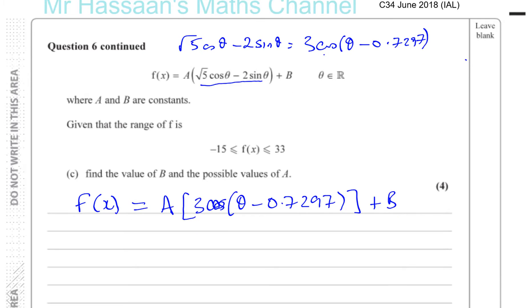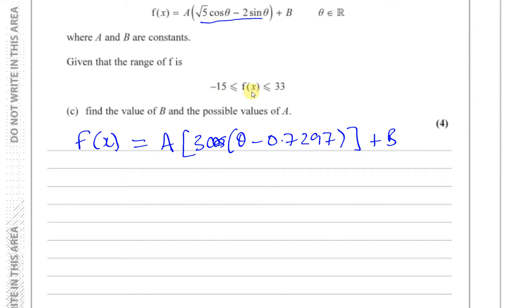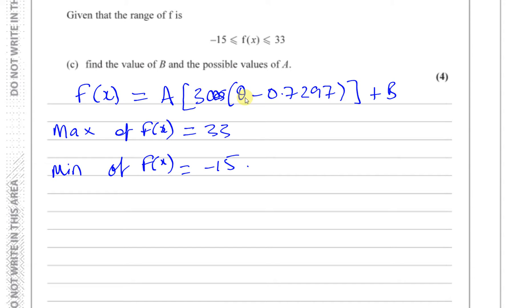Basically what they're telling us is this is the range of f of x. So, the maximum value of f of x is equal to 33, and the minimum value of f of x is equal to minus 15. Now, when does this reach its maximum value? Let me just rewrite it. f of x is equal to 3A times cosine of theta minus 0.7297 plus B.